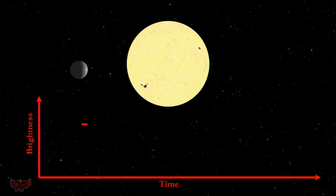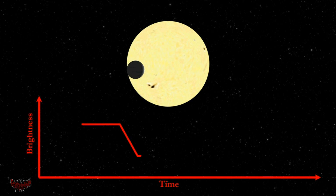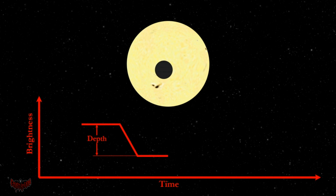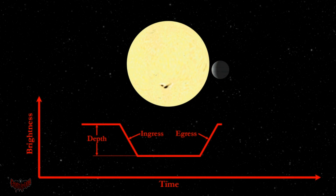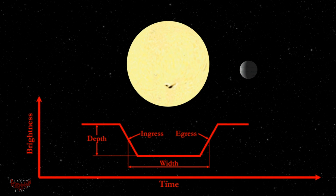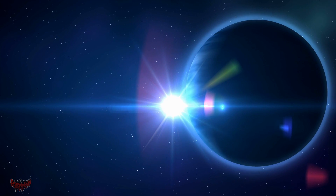The transit photometry method detects distant planets by measuring the minute dimming of a star as an orbiting planet passes between it and the Earth. The passage of a planet between a star and Earth is called a transit. If they detect dimming at regular intervals and it lasts a fixed length of time, then it's very probable that a planet is orbiting the star and passing in front of it once every orbital period.